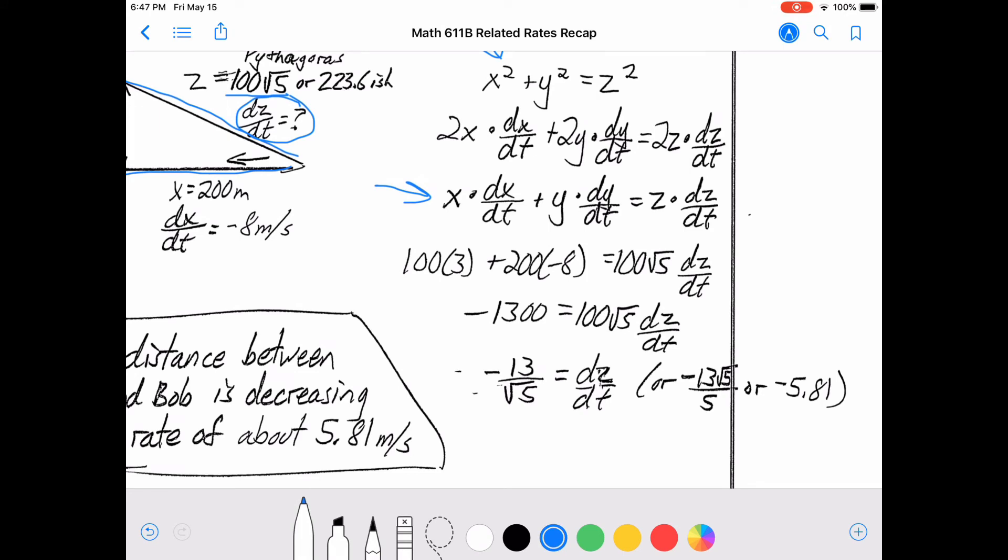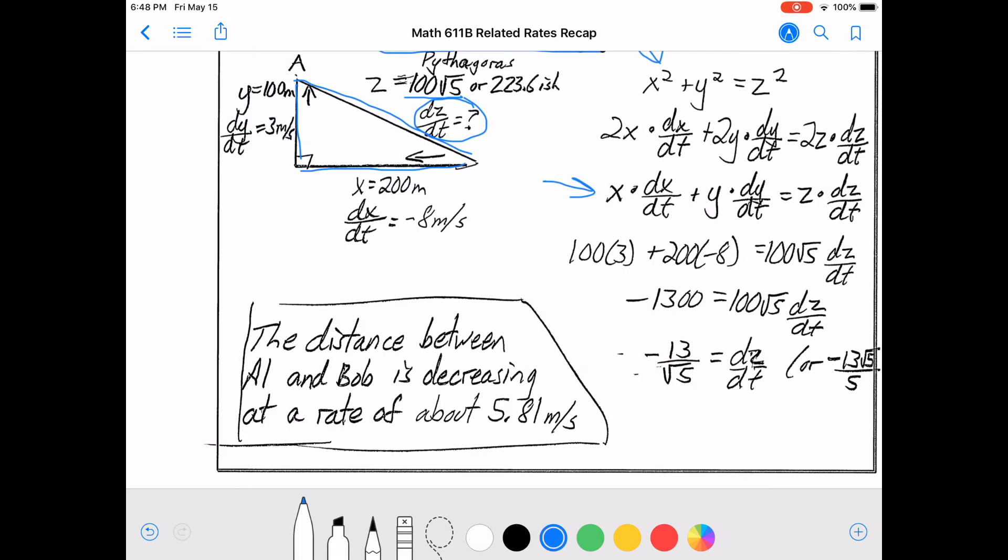What that means is that the distance between them is decreasing at a rate of 5.81 meters per second. The negative means that z is getting smaller. I make sure I write my answer to show what it means, and then I'm done.